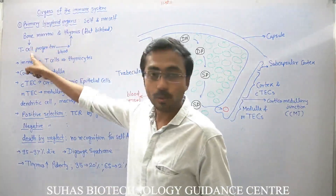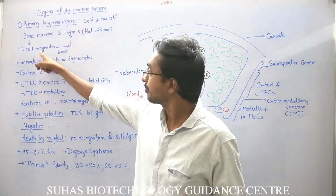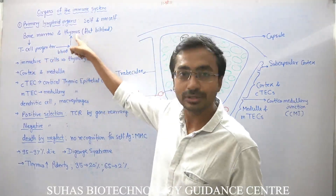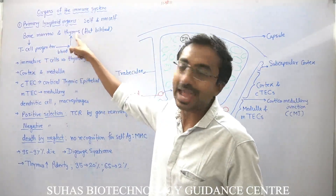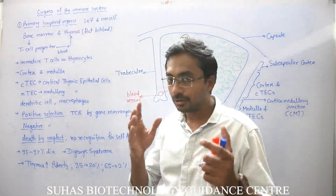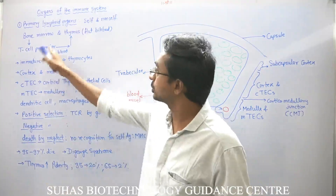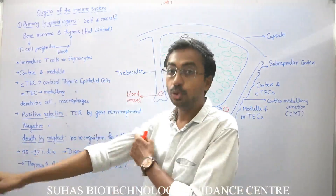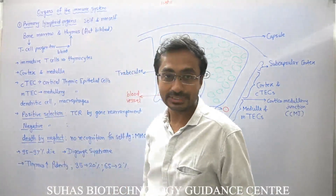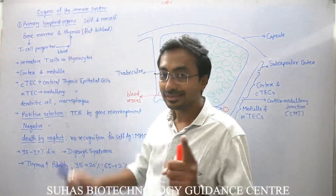The T-cell progenitor which is generated by bone marrow will travel through blood and reach up to the Thymus, and actually the maturation of the T-cell progenitor — to recognize what is self and non-self — will take place in the Thymus.